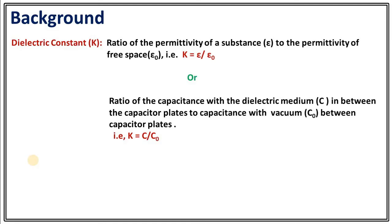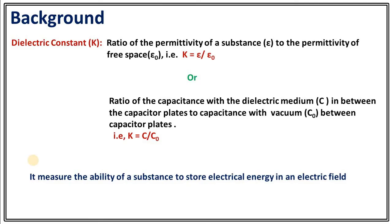In terms of capacitance, dielectric constant is the ratio of capacitance with a dielectric medium between the capacitor plates to the capacitance with vacuum between the capacitor plates. That is, k equals C upon C naught, where C is the capacitance with dielectric medium and C naught is the capacitance with vacuum. Dielectric constant is a very important quantity because it measures the ability of a substance to store electrical energy in an electric field.